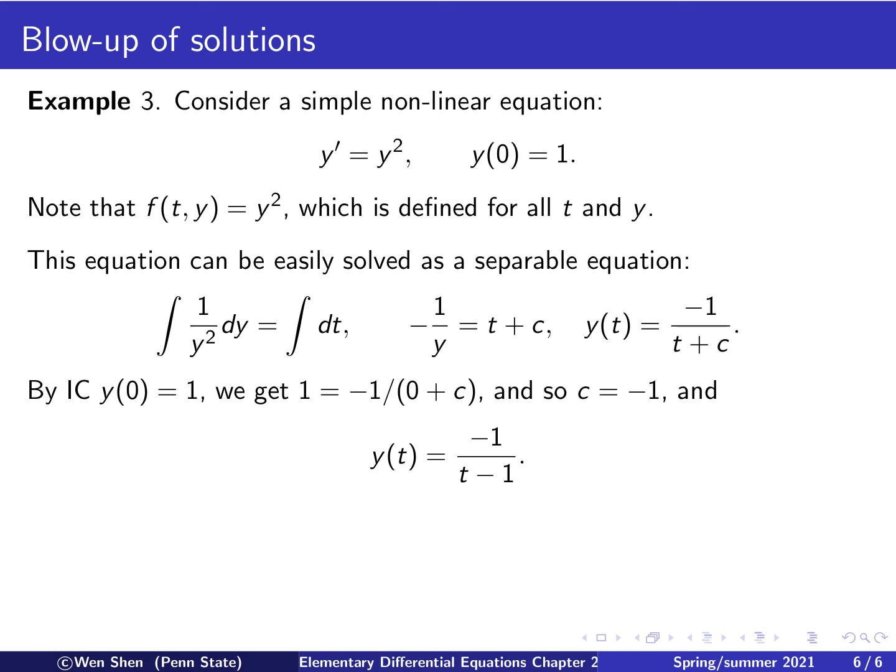So we can put that back in, and then we have our solution: y(t) is negative 1 over t minus 1.